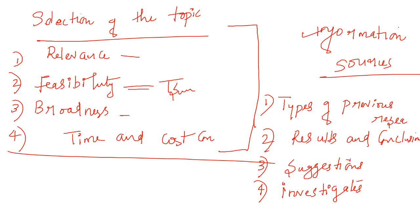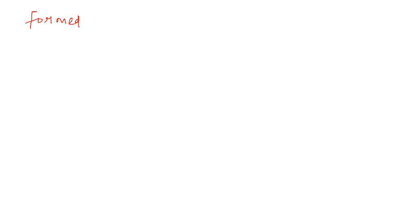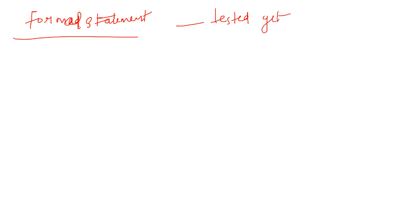Now let's discuss stating a hypothesis, research questions, and objectives. Hypothesis and research questions are framed keeping in mind the topic of research. A hypothesis is a formal statement that has not been tested yet. The predicted relationship between variables is stated as either true or false.